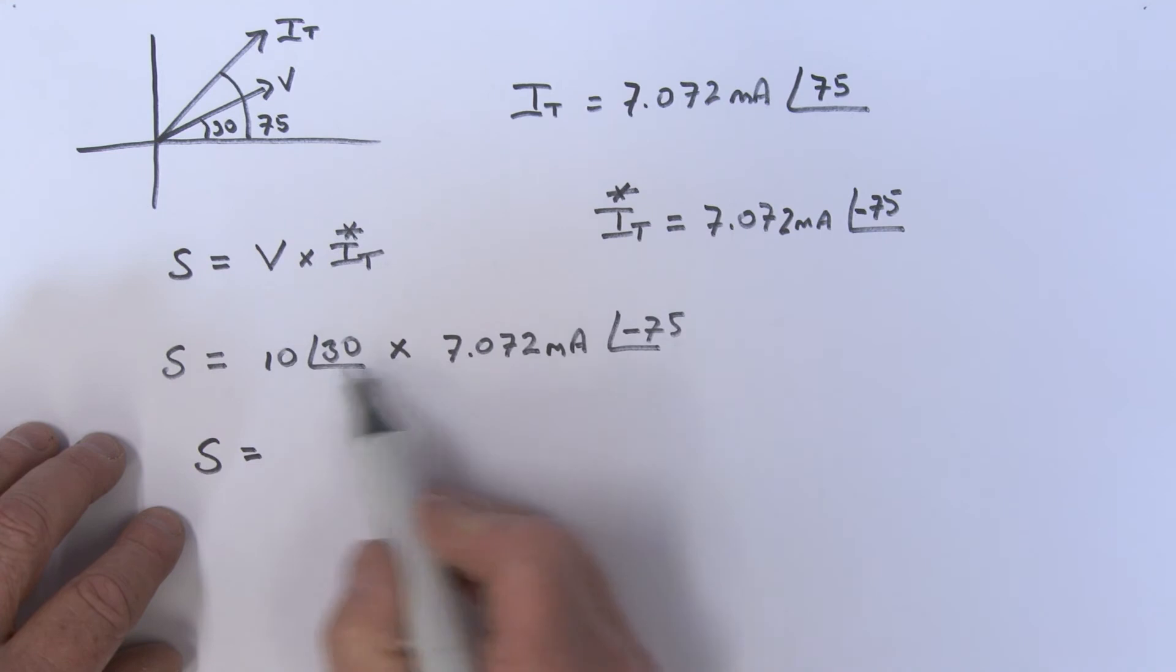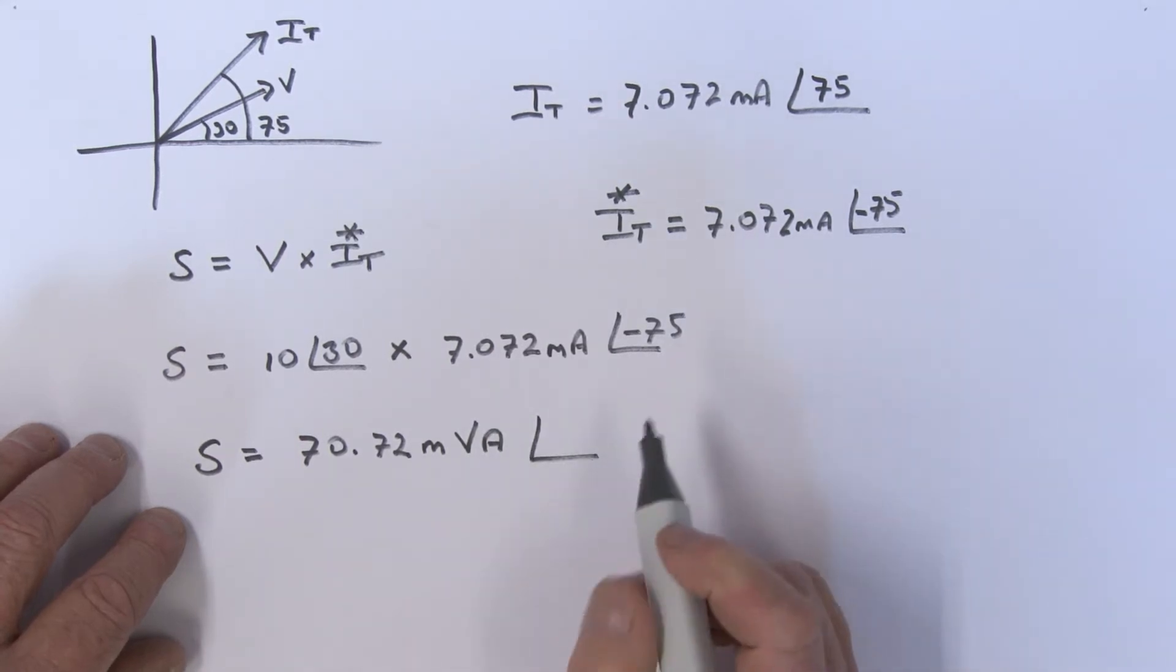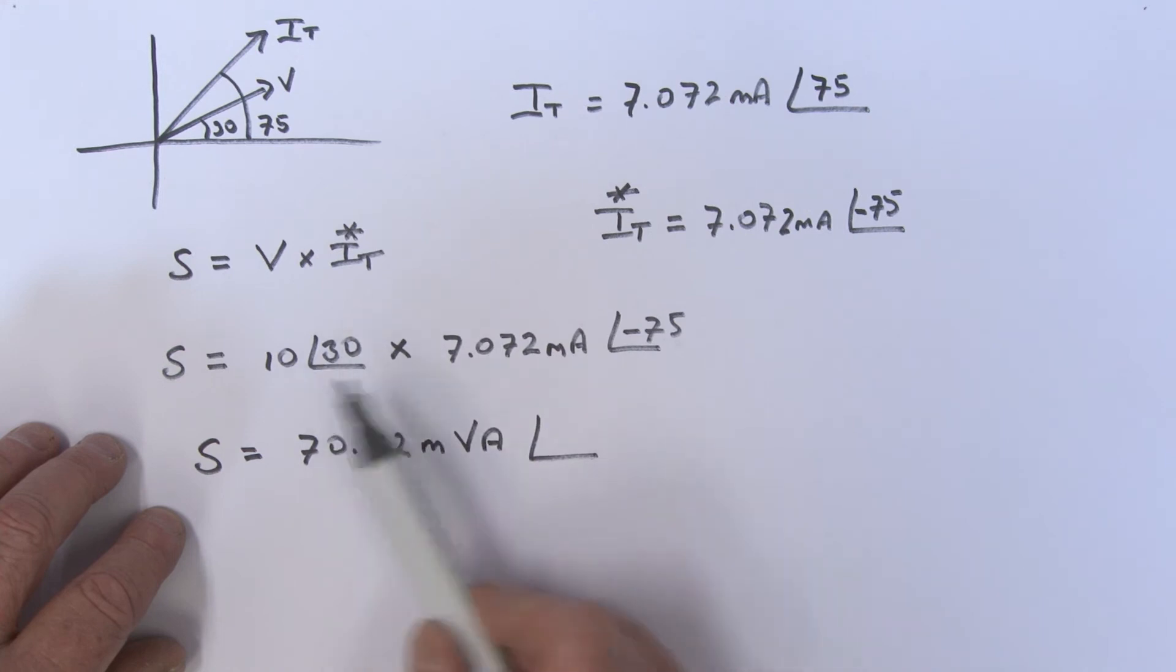So we're multiplying this by this, so this is 70.72, and what is that? That's a milli, and it's volt-amps being the unit.